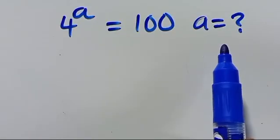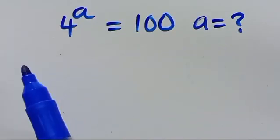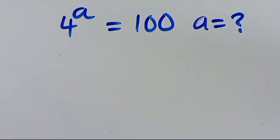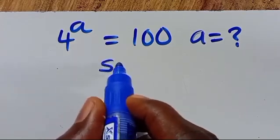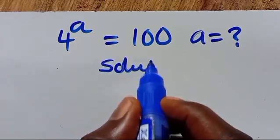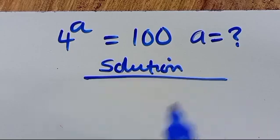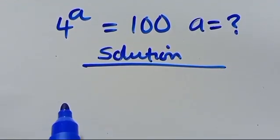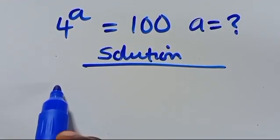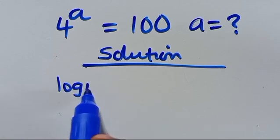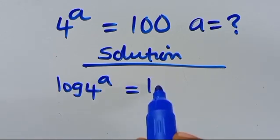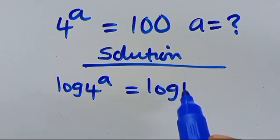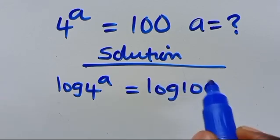What is the value of a, given that 4 to the power of a equals 100? Let us find the solution. We introduce log to both sides: log of 4 to the power of a equals log 100.